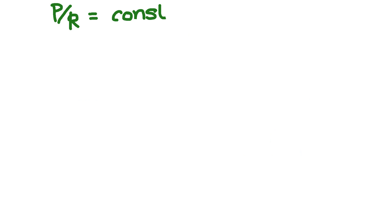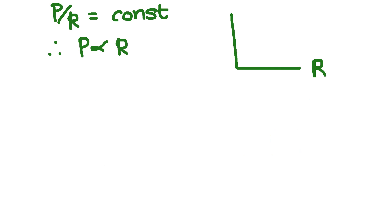In series, P over R is constant, meaning P and R are directly proportional. If R is the independent variable and P is the dependent variable, we end up with a straight line graph through the origin. On the other hand, let's look at what would happen for two resistors in series as an example.